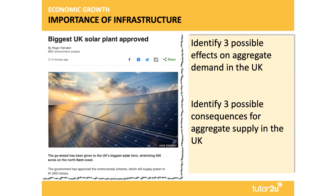Just a few days ago, I spotted a news report that planning had been given for the go-ahead of the construction of the biggest UK solar plant — to be built on the North Kent coast, capable of supplying power to nearly 100,000 homes. There are some environmental concerns in the project. I've asked two questions: identify three or four possible effects on aggregate demand, and identify some possible consequences for aggregate supply.